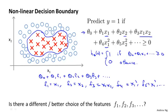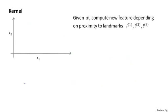But the question is: is there a different or better choice of features than these high-order polynomials? It's not clear that high-order polynomials are what we want. And when we talked about computer vision — when the input is an image with lots of pixels — we also saw how using high-order polynomials becomes very computationally expensive because there are a lot of these high-order polynomial terms. So is there a better choice of features f one, f two, f three?